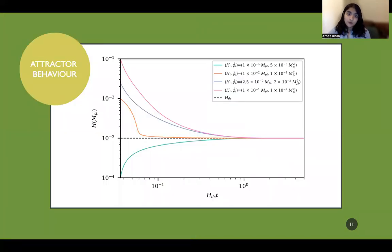So first, I'm going to show you here a plot of the attractor behavior. So on the y-axis, we've got our Hubble parameter. And on the x-axis, we've got time dependence. As you can see, for various initial values of the Hubble parameter and the initial field speed, we see a common evolution towards the attractor value.